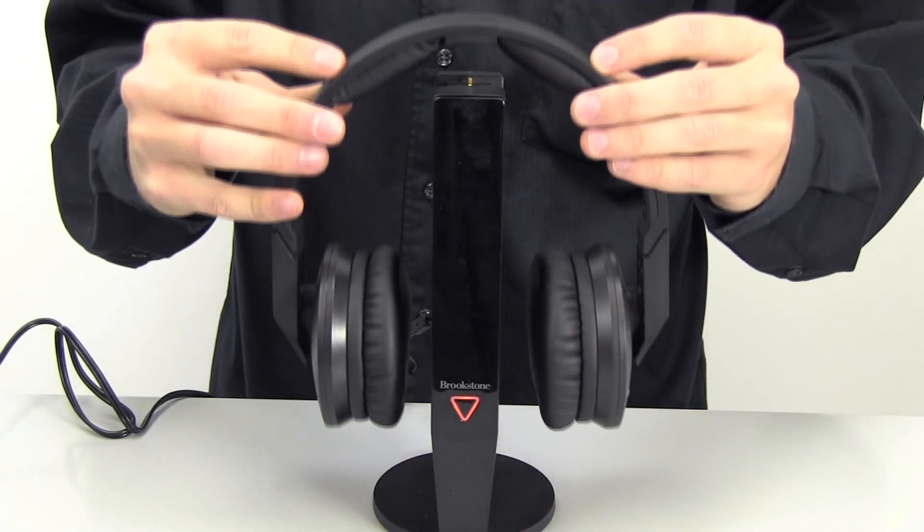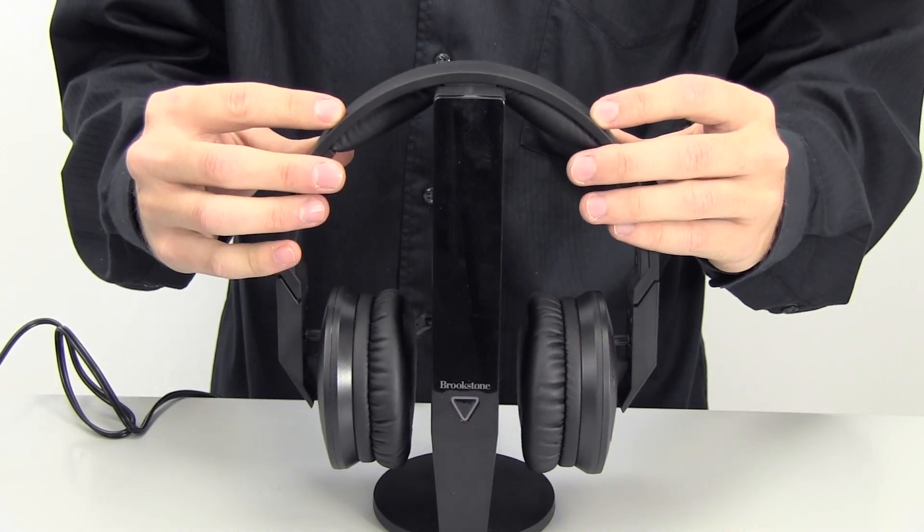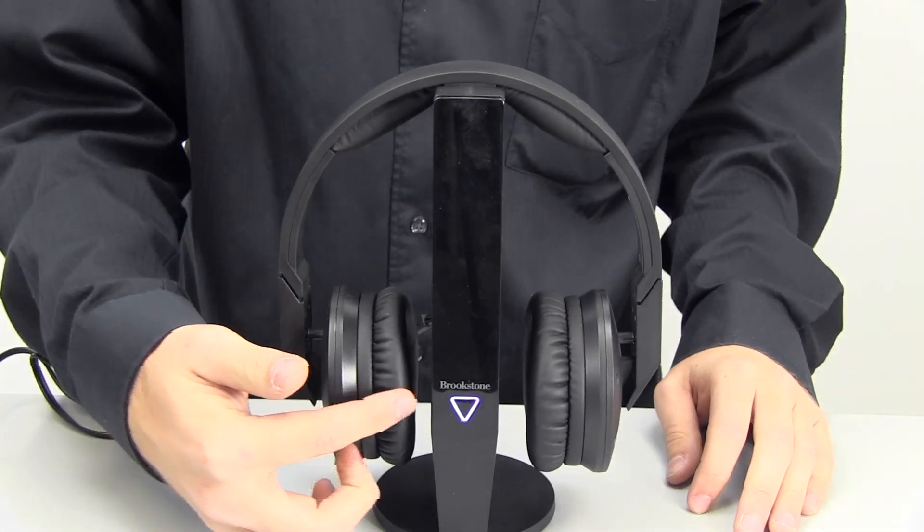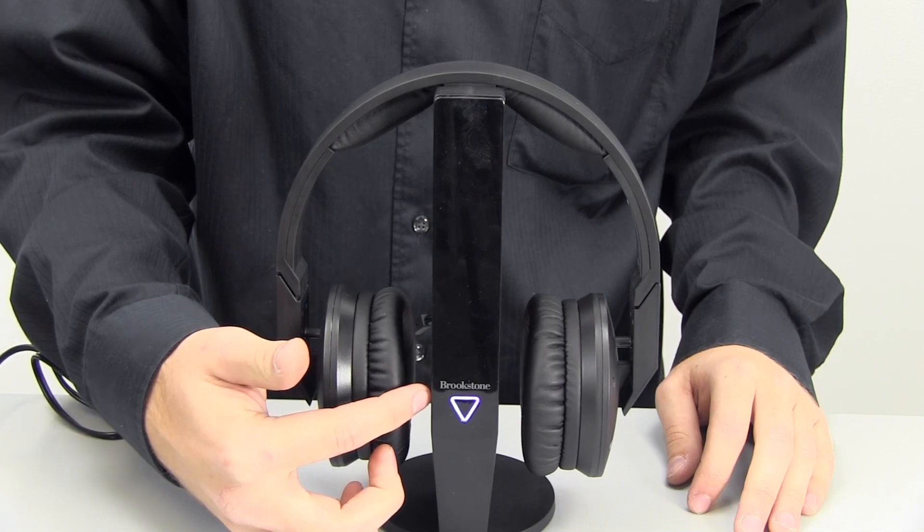Place the headphones on the transmitter to charge before use. For the initial charge, let the headphones charge about 7 hours. For each charge after that, it only takes about 3 hours.